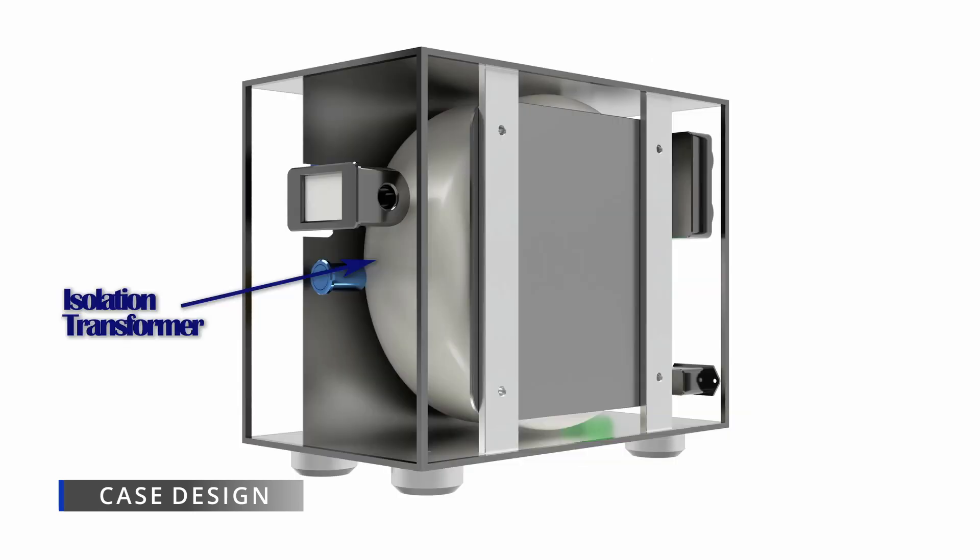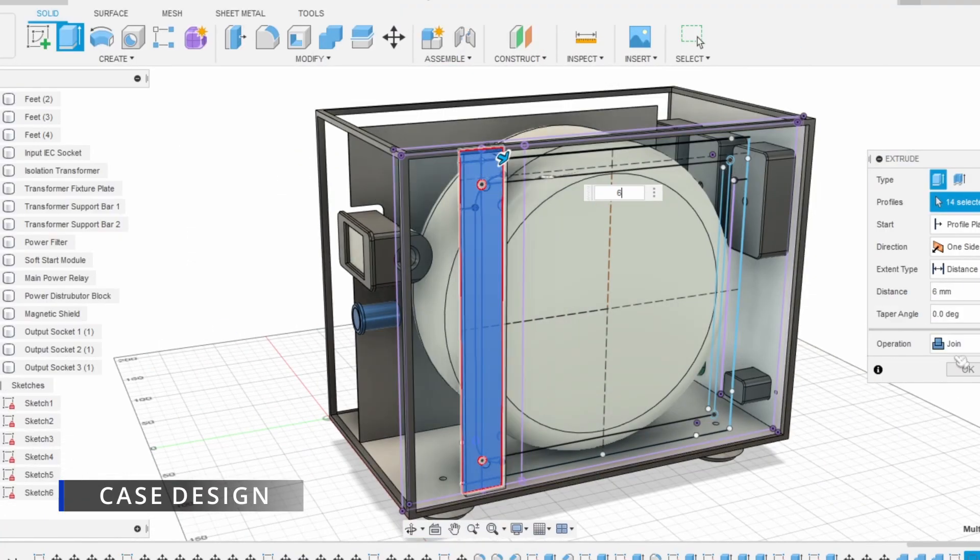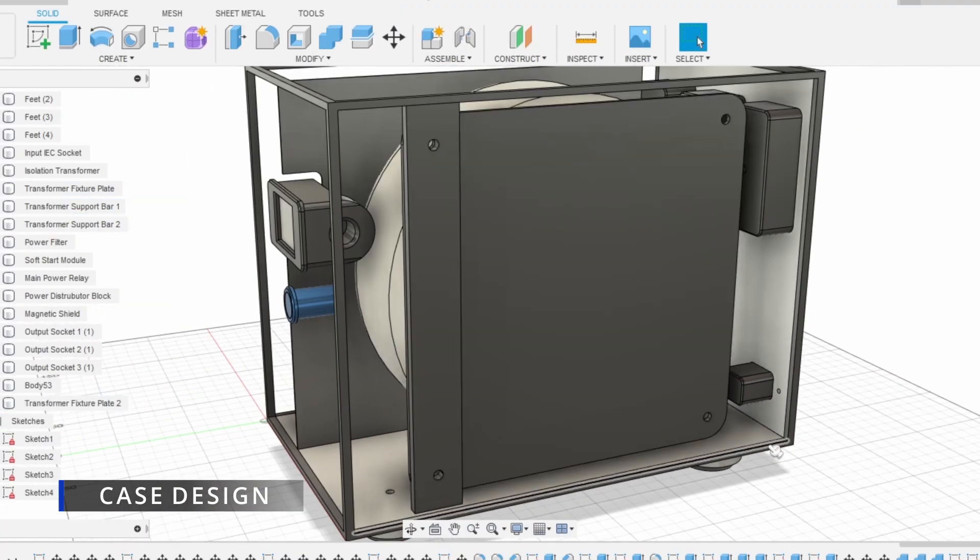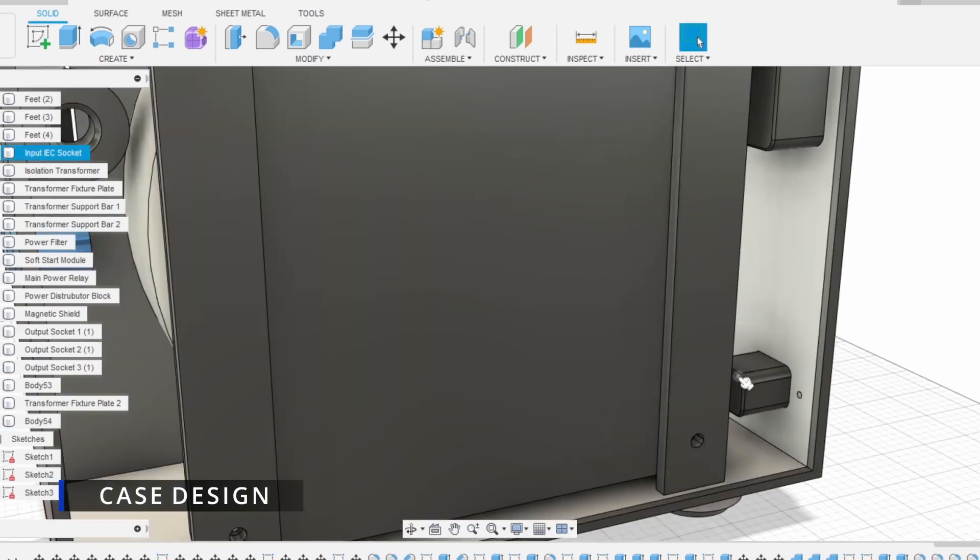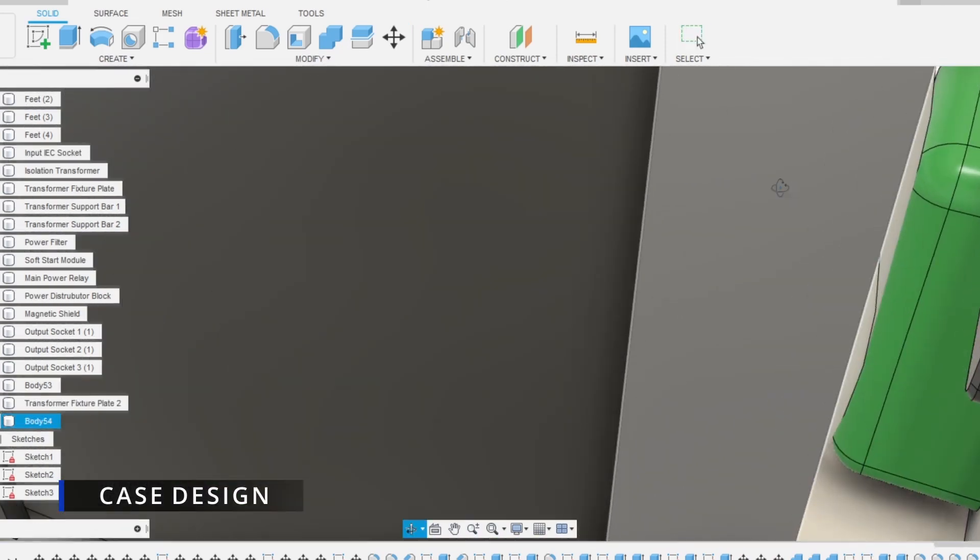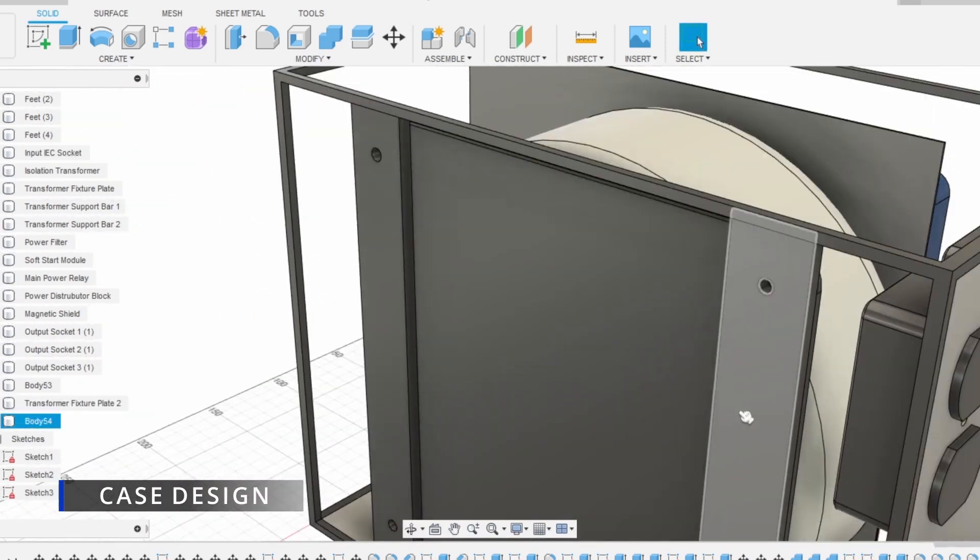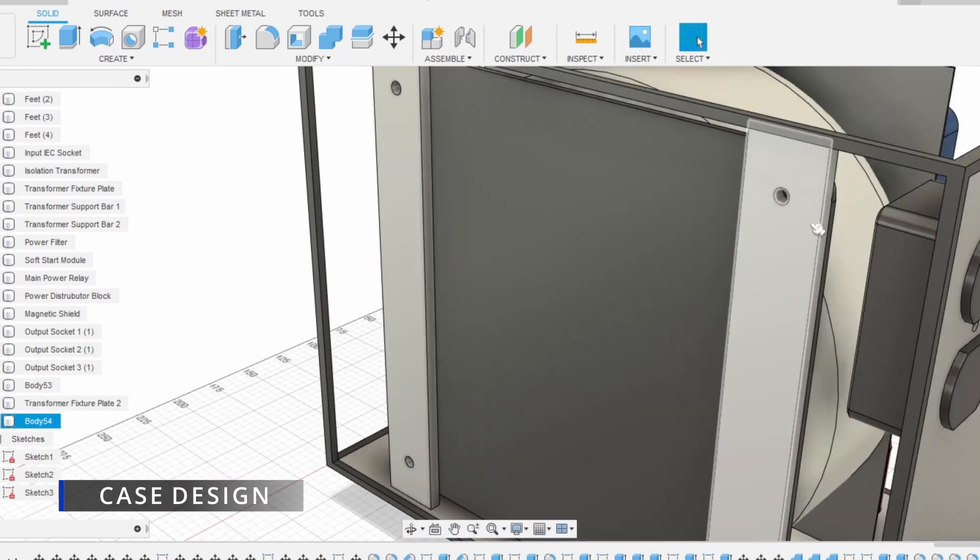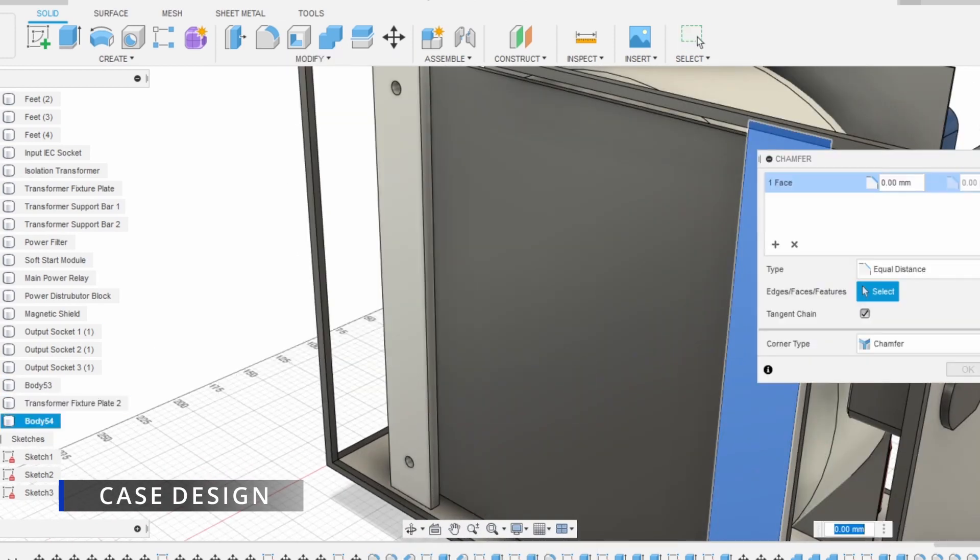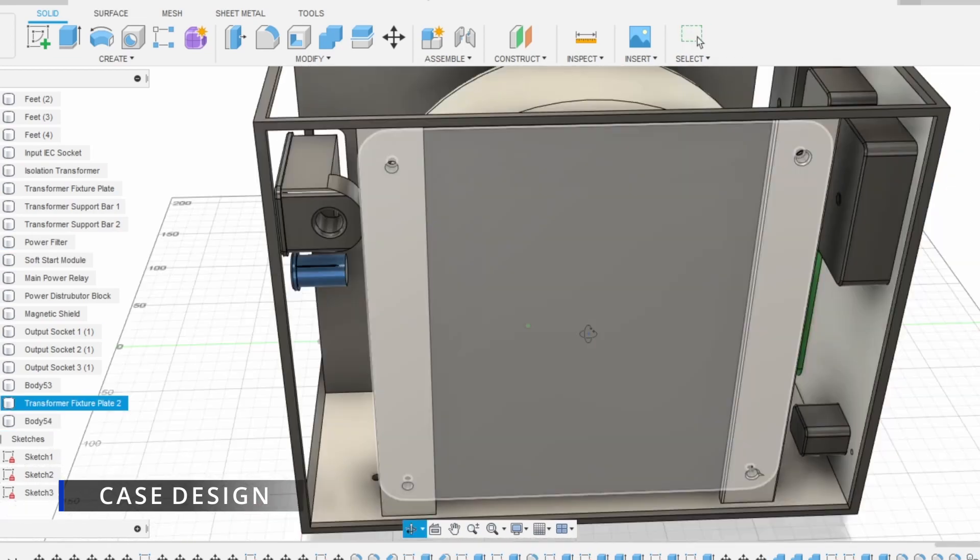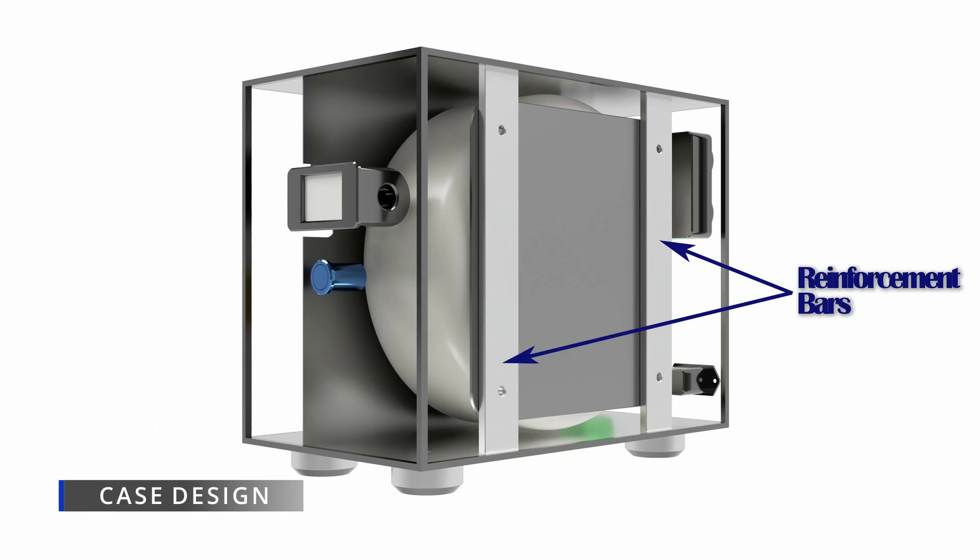The isolation transformer is the biggest component in this device. It is also the heaviest one that weighs 22 kilograms. It is so big that the only way to fit into the case is to install it vertically. As the plates of the case are only 3 millimeters thick, there is no way that the right-hand side plate can support the weight of the transformer. As such, two 6 millimeters aluminum bars are added between the transformer and the case plate to strengthen the support to the transformer.